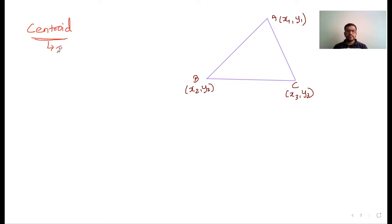It is the point of intersection of three medians. And what do you mean by medians? A line segment joining a vertex with the midpoint of the opposite side.